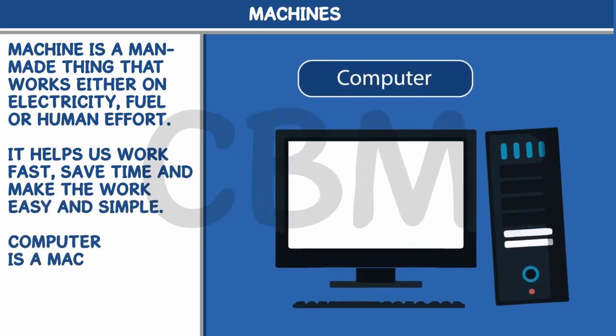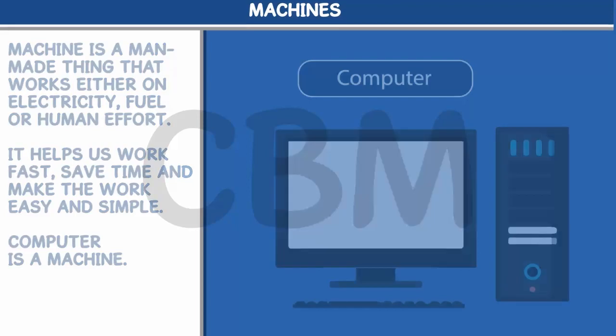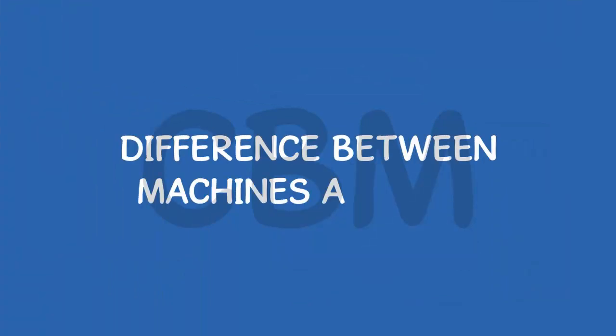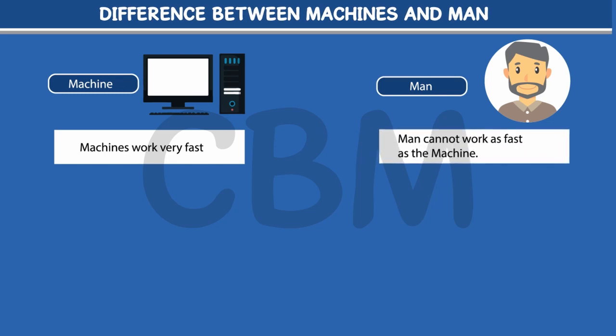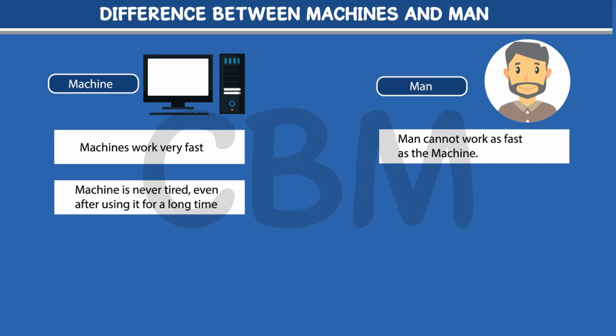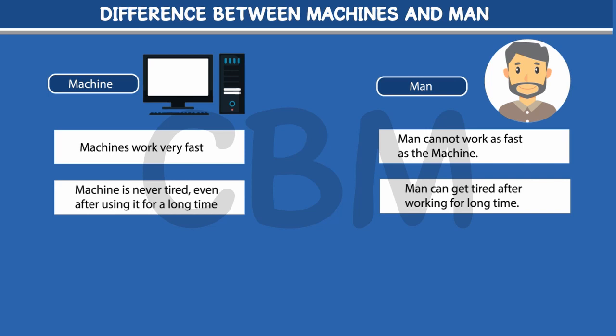Computer is a machine. Difference Between Machines and Man: Machines work very fast. Man cannot work as fast as the machine. Machine is never tired, even after using it for long time. Man can get tired after working for long time.